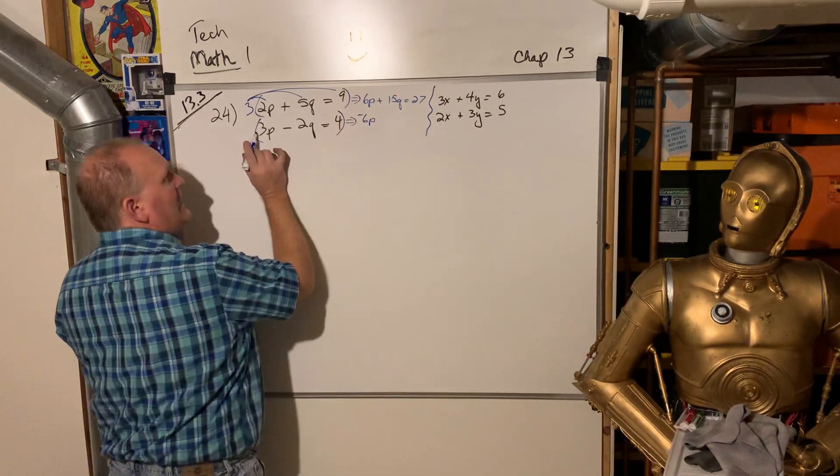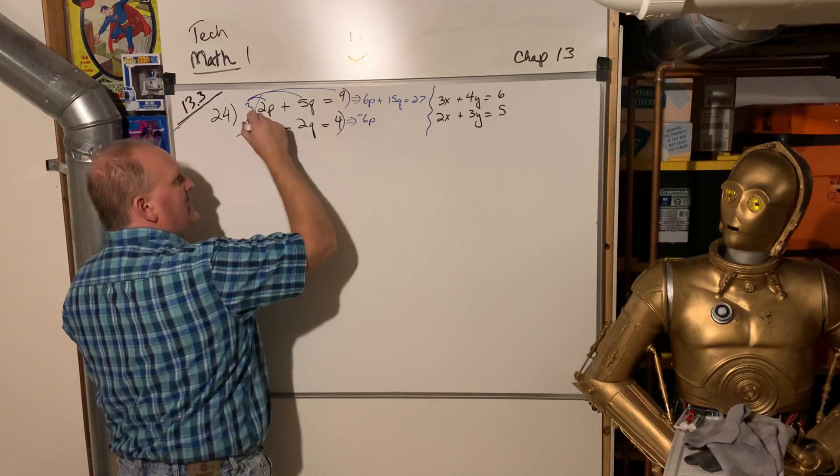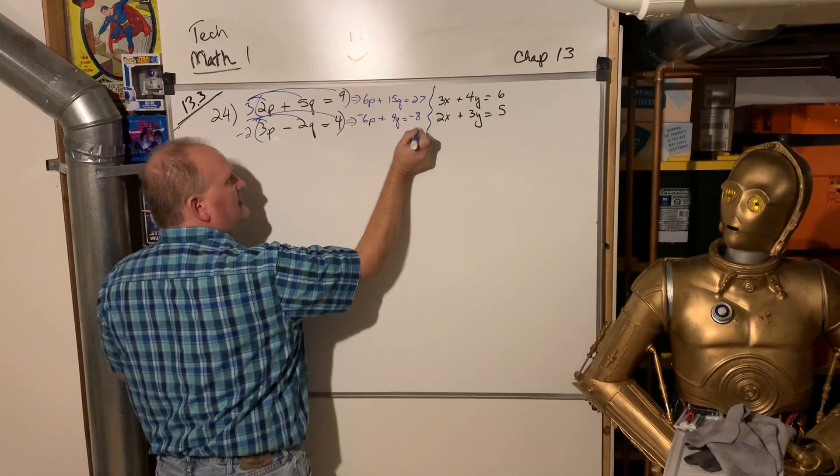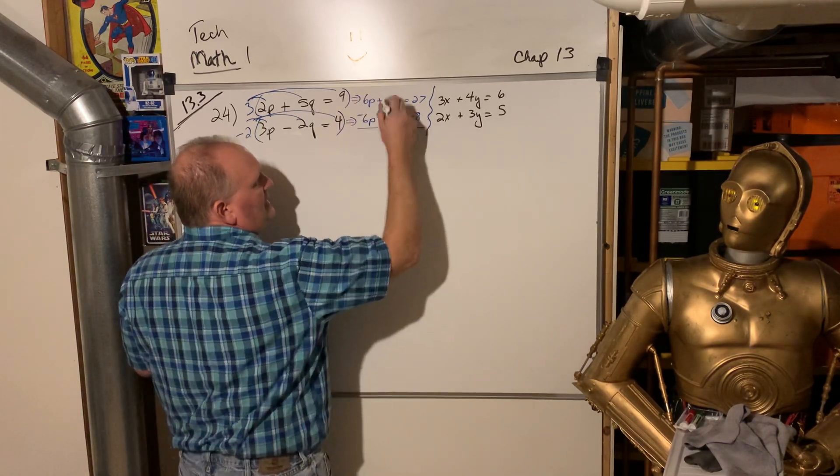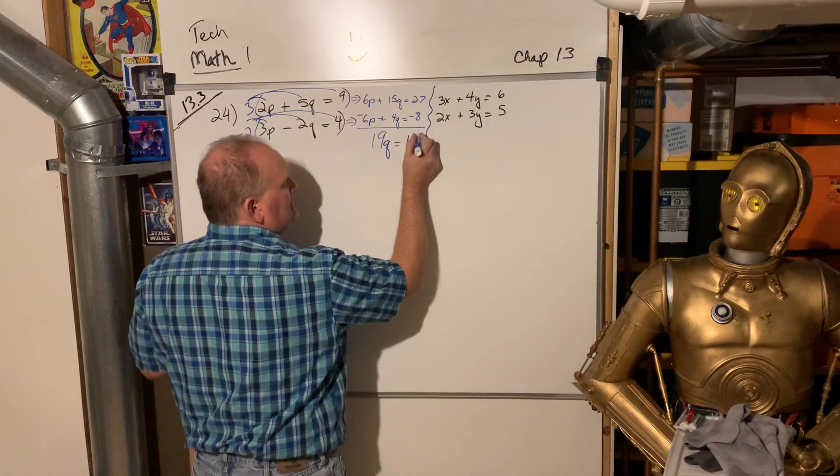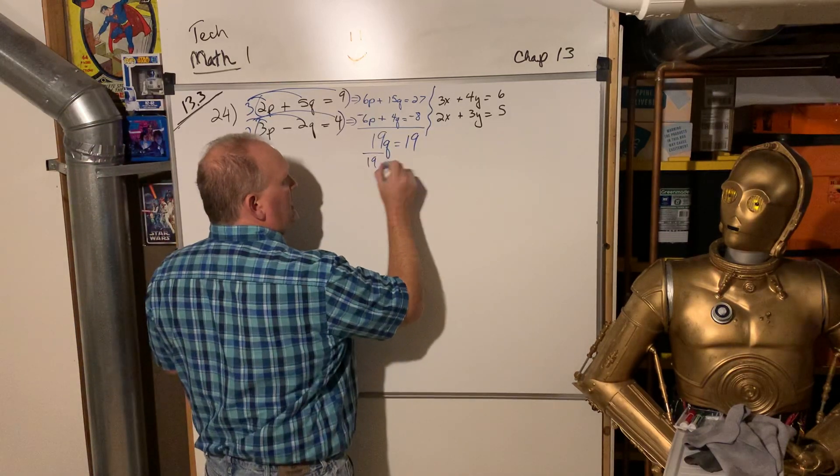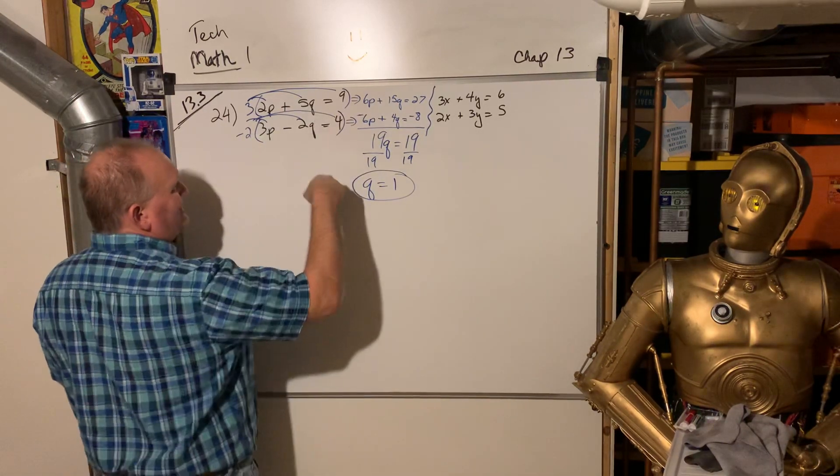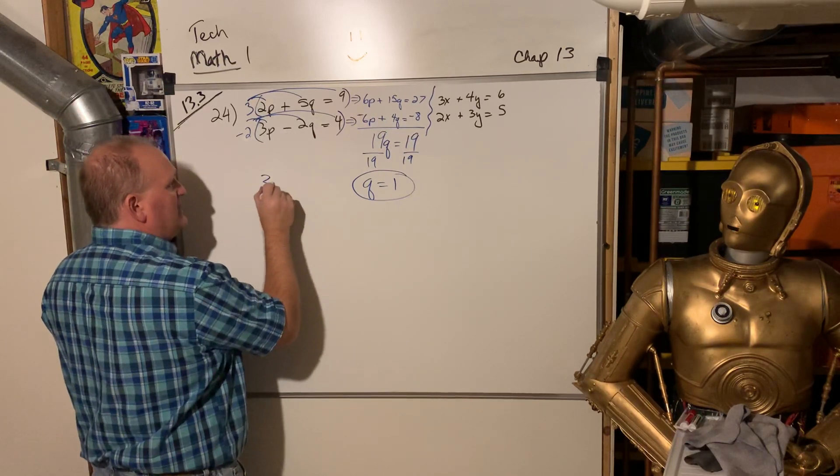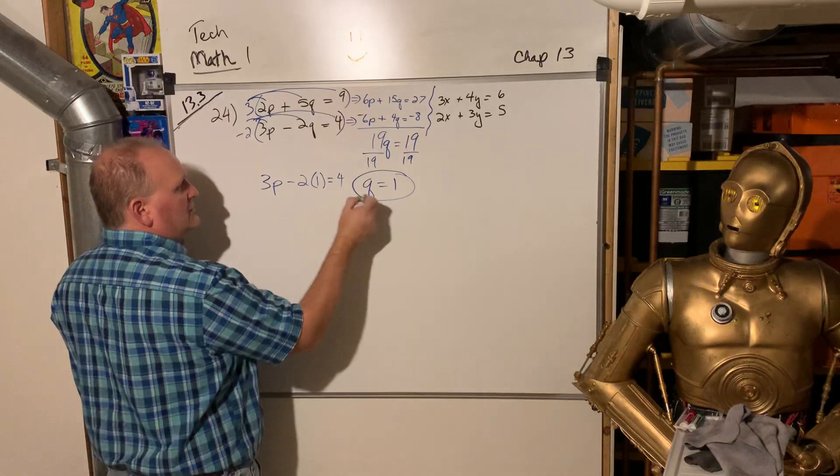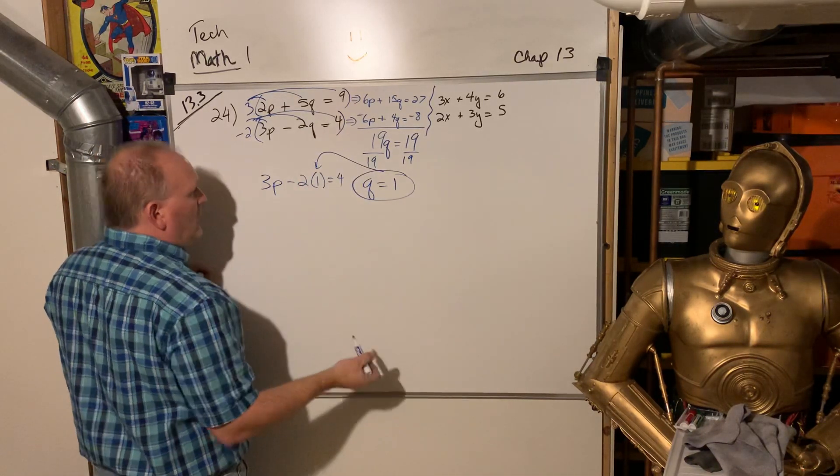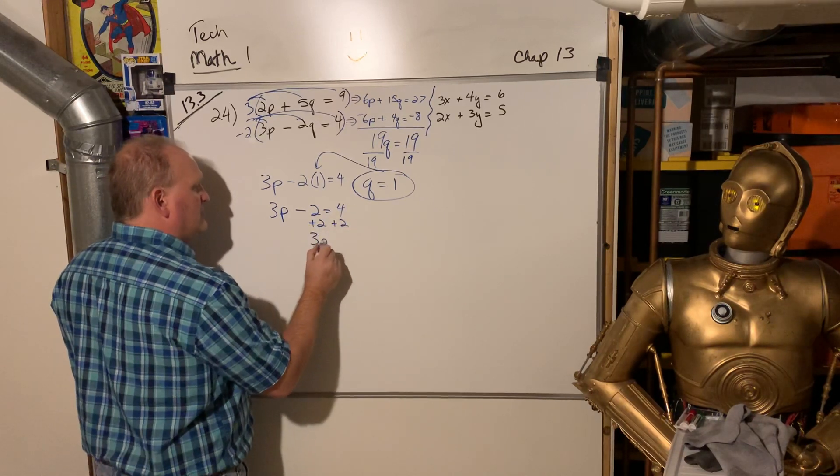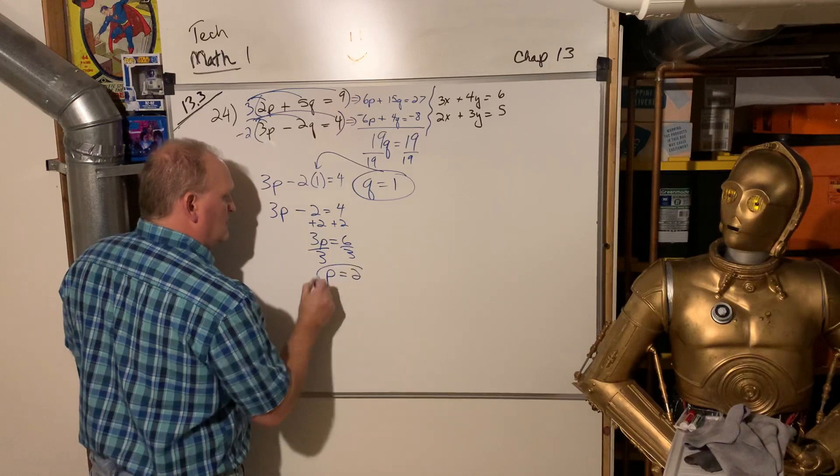And now I add straight down, the p's die. I get 19q is equal to 19. And then I divide by 19 and I get a nice answer - q equals 1. And then I take that 1 and I put it into the easier - both of them are pretty tough. I'll go into this one. 3p minus 2 times 1 is equal to 4. So I replaced the q in this equation with the 1 - that again gets it down to a single variable. So 3p minus 2 is equal to 4. Add 2 to both sides. 3p is equal to 6. Divide by 3. P is equal to 2. Okay.